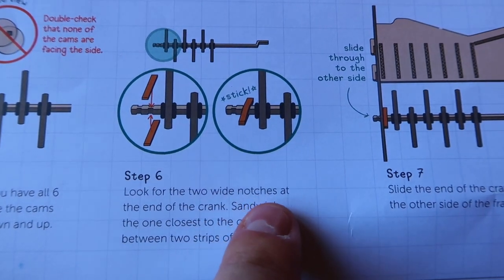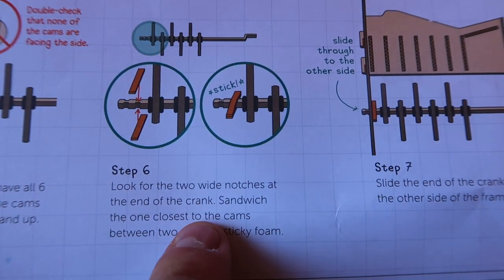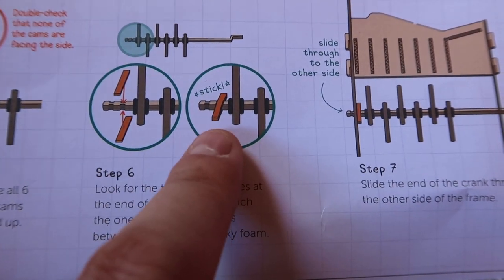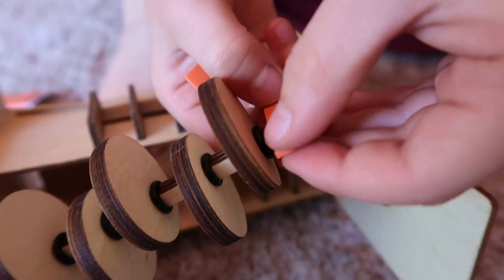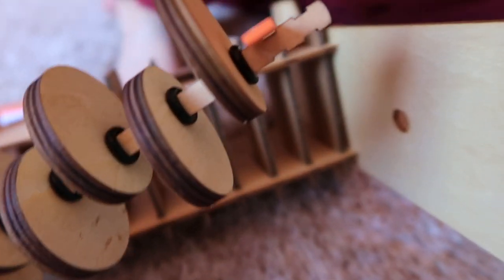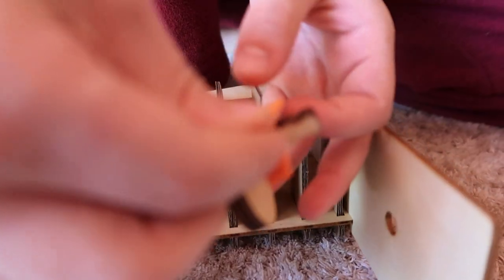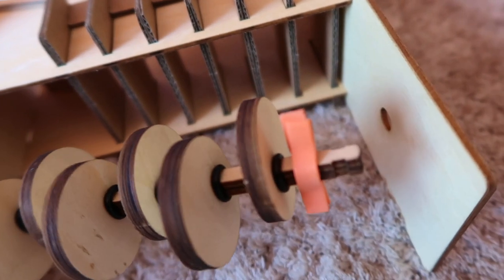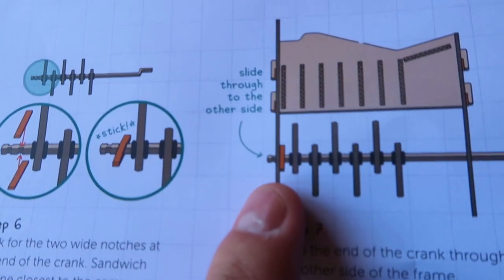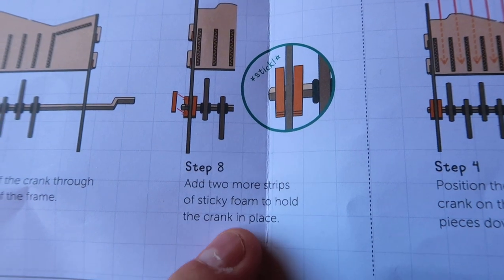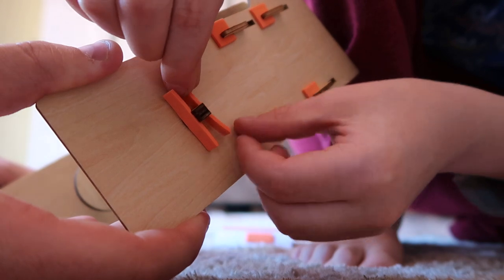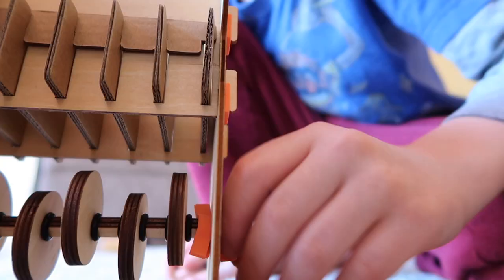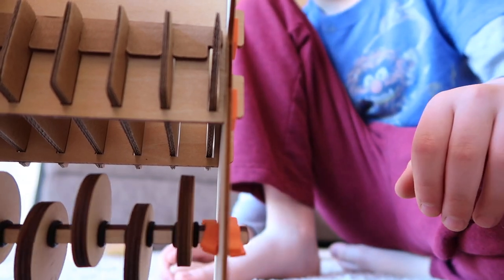Step six, look for the two wide notches at the end of the crank. Sandwich the one closest to the cams between two strips of sticky foam. Put one on top. Try to make it right in the middle. Good, that looks great. Now do one on the other side. And then push the sides together. Perfect. Slide the end of the crank through the other side of the frame. And then it says add two more sticky foams to hold the crank in place. And that's the end of building the crank. If you're wanting to spin it, it's not gonna go anywhere. It's holding it in place.